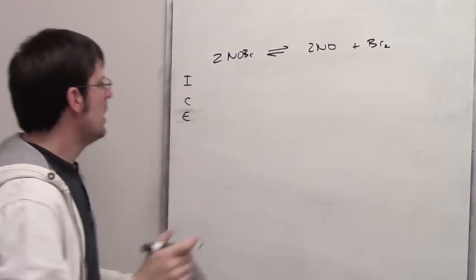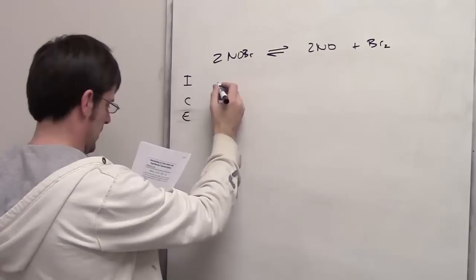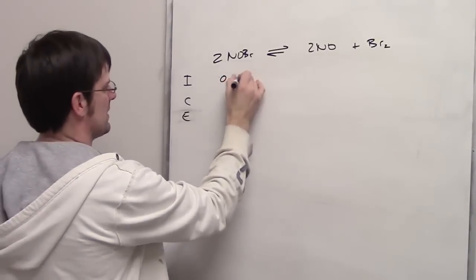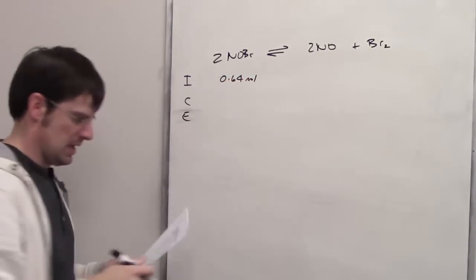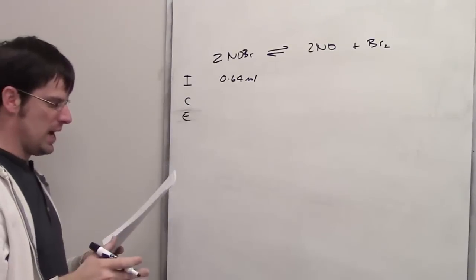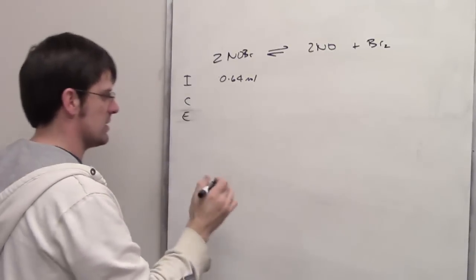It says that a sample of NOBr, that's what I'm going to call it, that has 0.64 moles in it, is placed in a 1 liter flask. Beautiful thing about concentration, molarity is of course moles per liter.